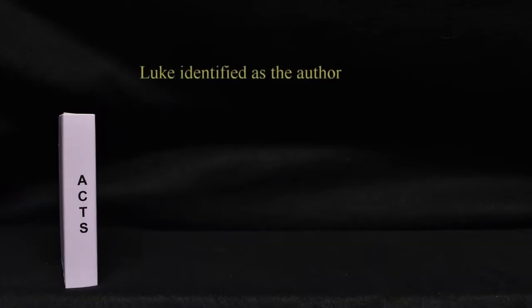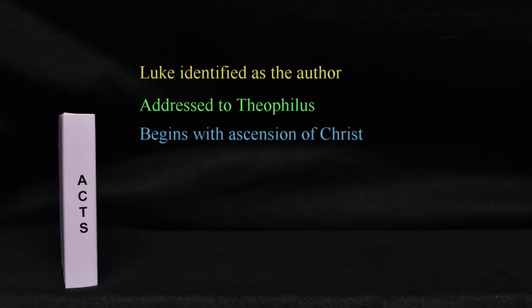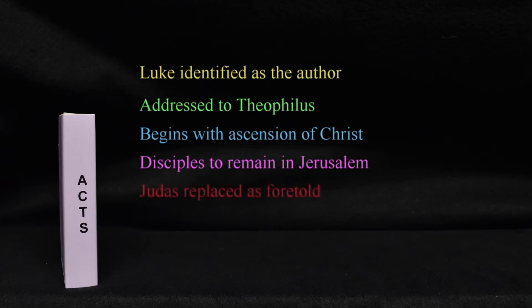We can identify Luke as the writer of the book of Acts based on the address to Theophilus, which matches the opening of the gospel account of Luke. The narrative begins with the ascension of Christ as he tells his disciples to return to Jerusalem until they receive power from on high. A replacement is made for Judas, who has committed suicide, which complements the number of the twelve. This also fulfills prophecy, which foretold this event.